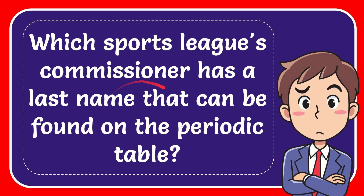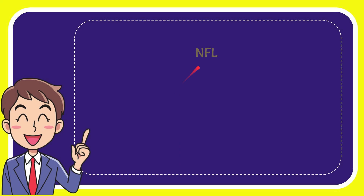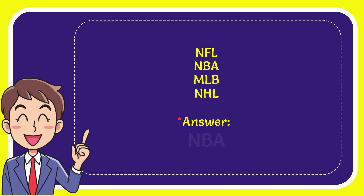Hello, what's going on everyone. In today's video I'm going to give you the answer for this question: which sports league's commissioner has a last name that can be found on the periodic table? Here's the list of options — the first option is NFL, the second is NBA, the third is MLB, and the last option is NHL.